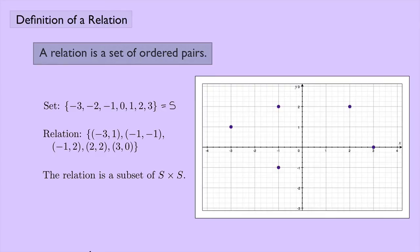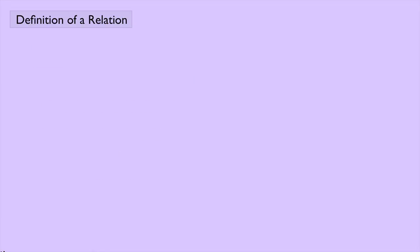So we see some patterns here. Let's try and get an official definition for a relation. A relation (and I'm going to use a fancy R to represent the relation here) on a nonempty set S is a subset of S cross S, or S times S. That's the Cartesian product of S with itself.